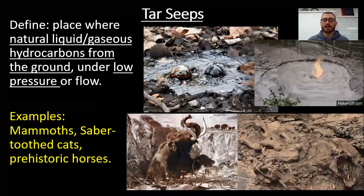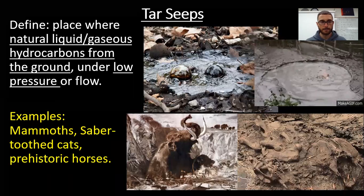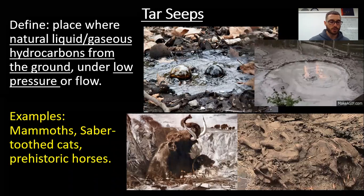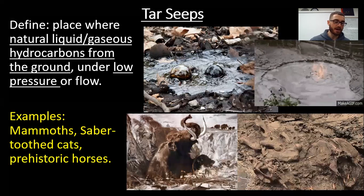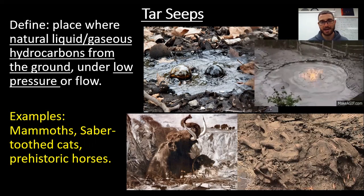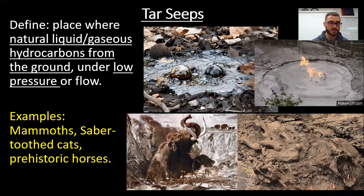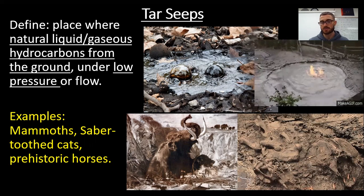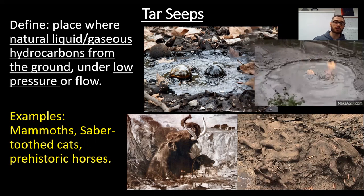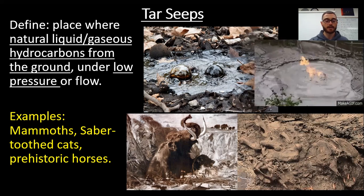Tar seeps — tar works like quicksand. You have natural liquid and gas carbons coming out of the ground under low pressure. A creature can step in, get stuck, can't get out, passes away, and its fossil is left in the tar pit. If dug out, you'll often find bones — like a mammoth right there. Examples include mammoths, saber-toothed cats, and prehistoric horses.